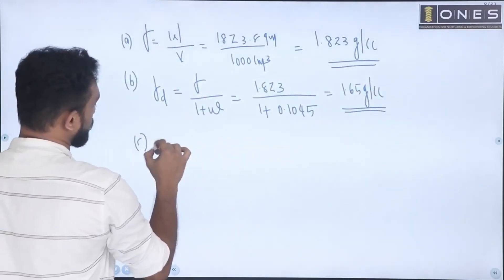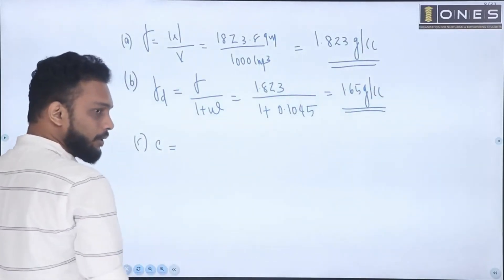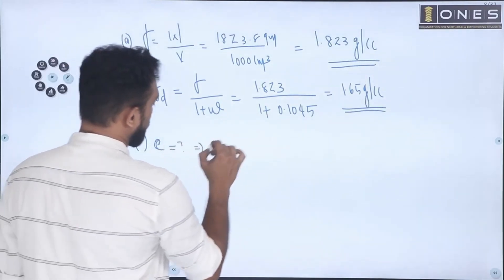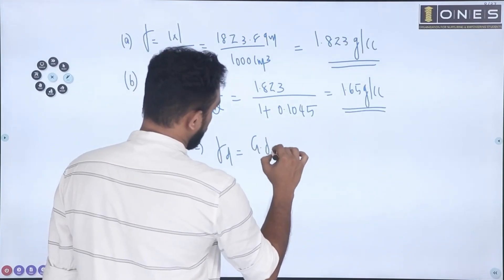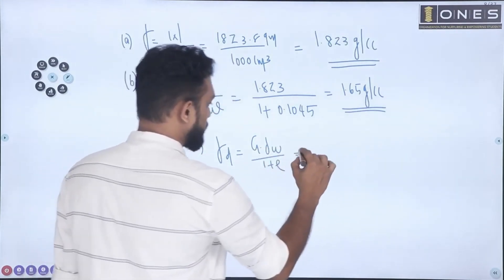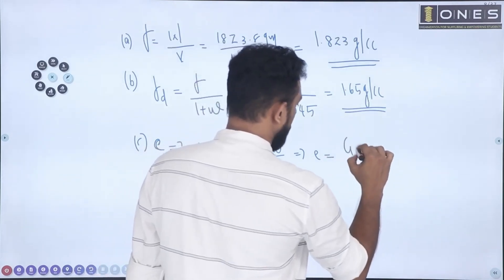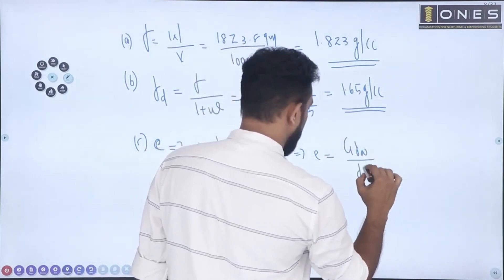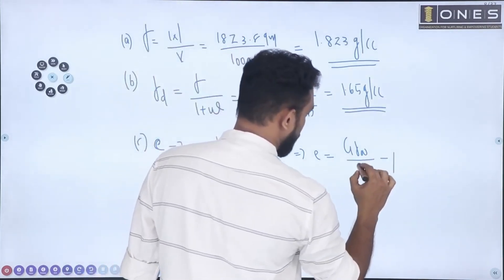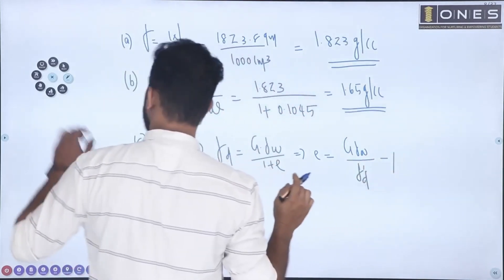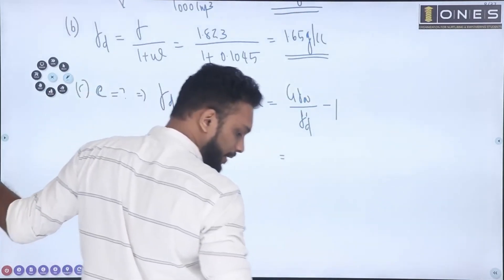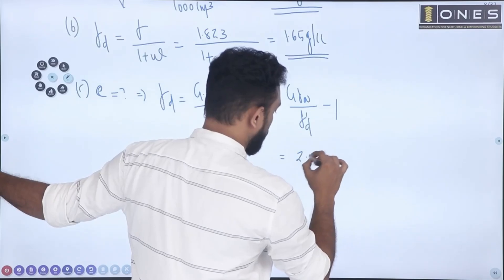For part c, void ratio — it is simple. The equation is gamma d equals G times gamma w divided by (1 plus e). Rearranging: e equals (G times gamma w divided by gamma d) minus 1. Substituting G equal to 2.65.